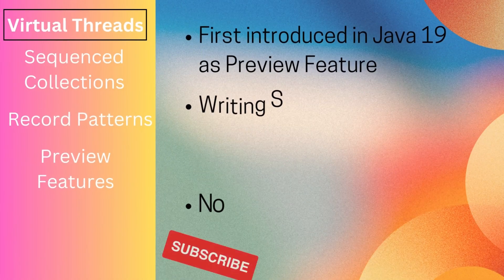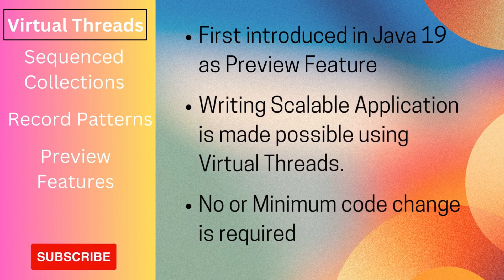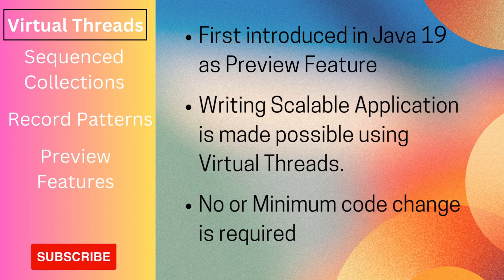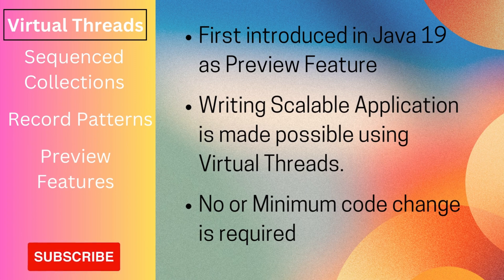Now let's start with the first feature: virtual threads. It was first introduced in Java 19 as a preview feature. Developers were working on this concept for a very long time under the name Project Loom. In Java 21, virtual threads are finalized and ready for production use.